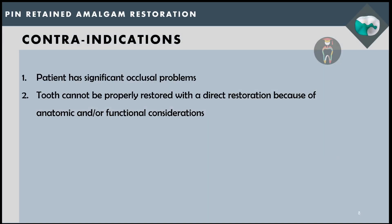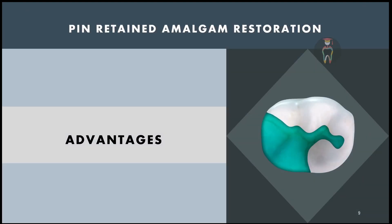There are few contraindications. Whenever there is a significant occlusal problem which cannot be corrected by a direct restoration like pin retained amalgam, it is contraindicated. Also, in situations where the tooth cannot be properly restored with a direct restoration due to anatomic location — for example, a third molar where placing a matrix band and pins would be very difficult — it is contraindicated.